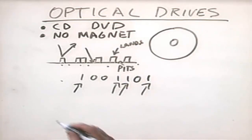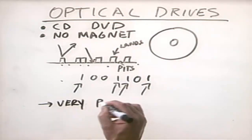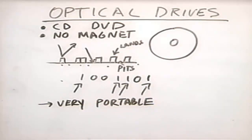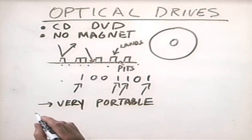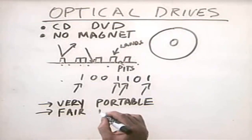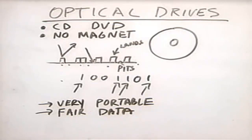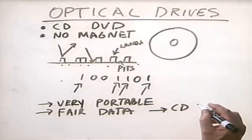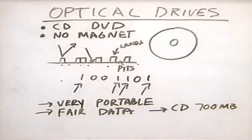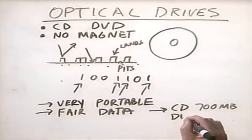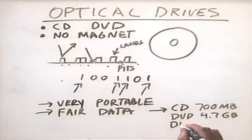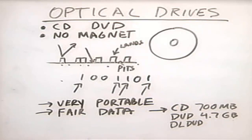Optical drives have some advantages over a hard disk drive or floppy. Number one, they're very portable — you can take a CD or DVD from one system to another and easily transfer data. They store a fair amount of data: a CD will hold around 680 to 700 megabytes, a single-layer DVD will hold 4.7 gigabytes, and a double-layer DVD will hold twice that amount.